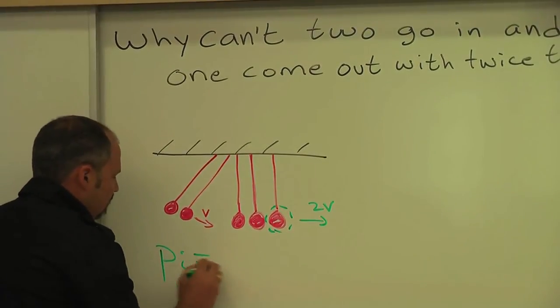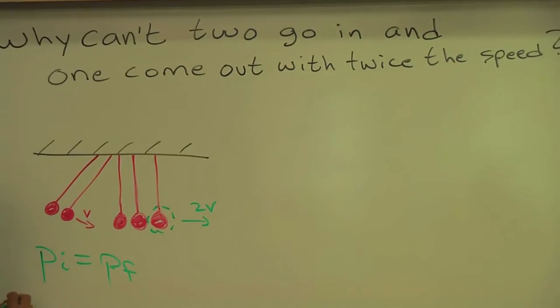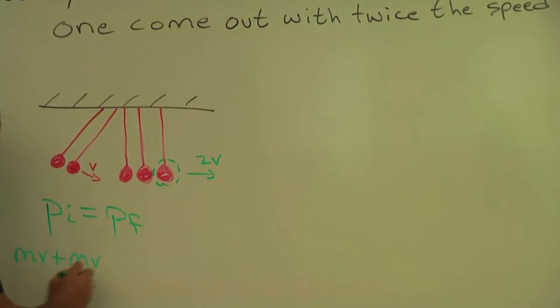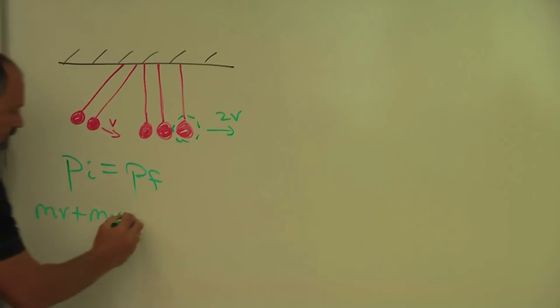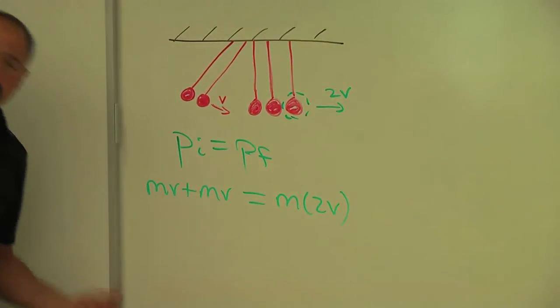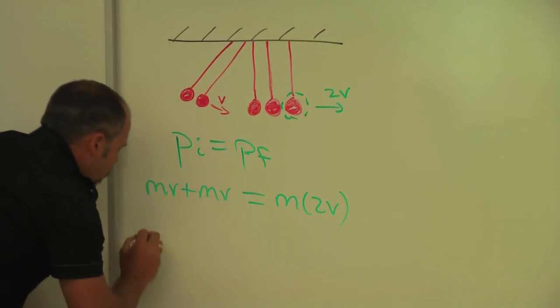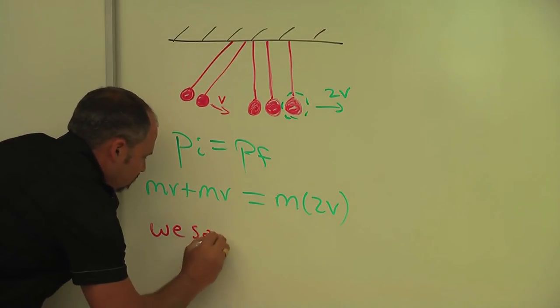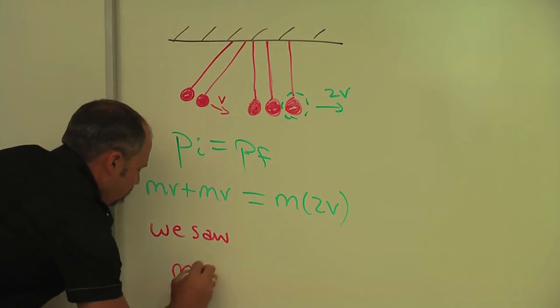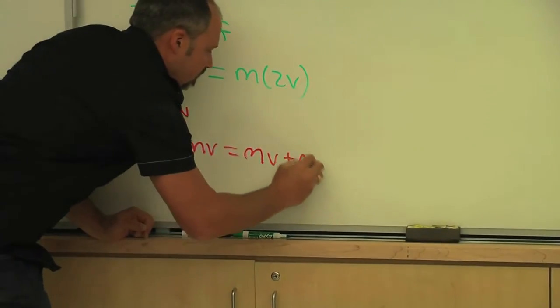So this is what I'm saying, is we would have an mv plus mv in the initial, right here, and that would equal m times two v. Clearly momentum is conserved, but that's not what we saw. We saw mv plus mv, and then we saw two coming out, mv plus mv.